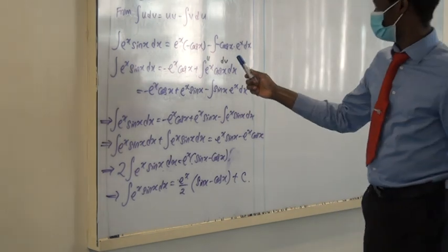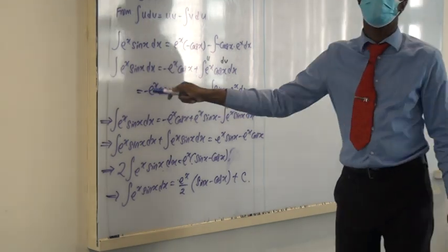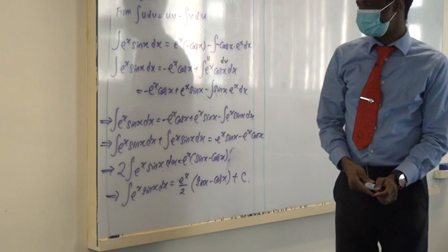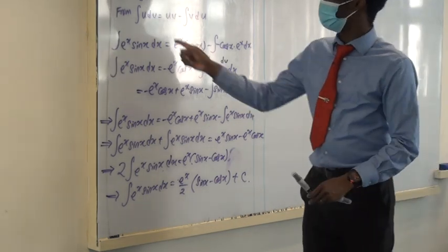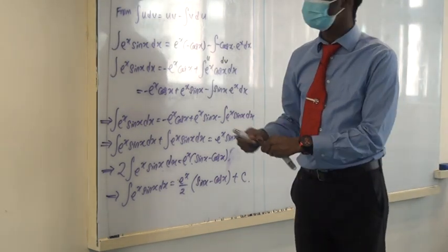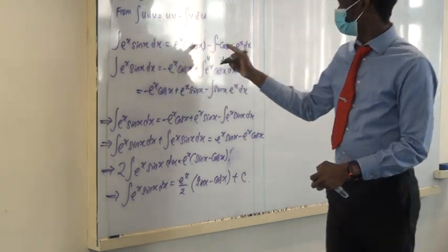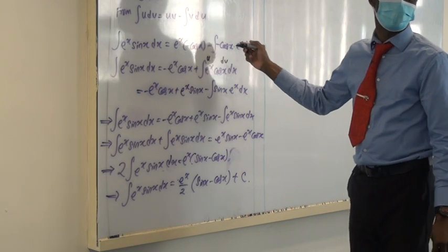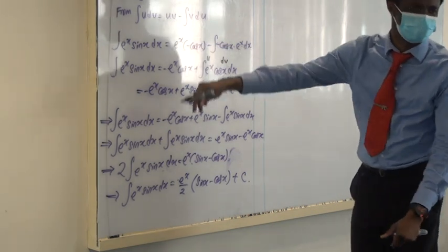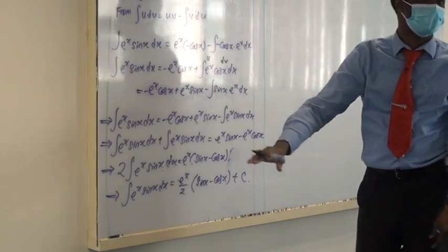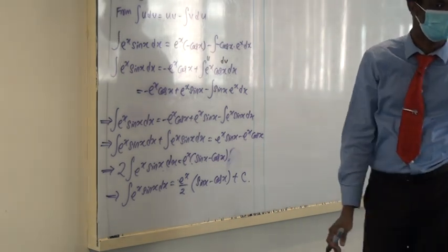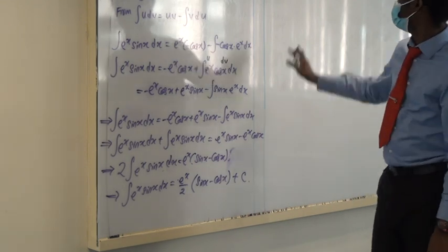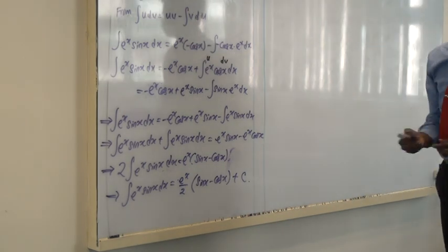When you have a repetitive problem, simplify until the original integral comes out again. If you read some textbooks, they call the integral I, so this could be I, 2I, 3I, and then they make I the subject of the formula. You might see that approach in some books — it's the same idea.